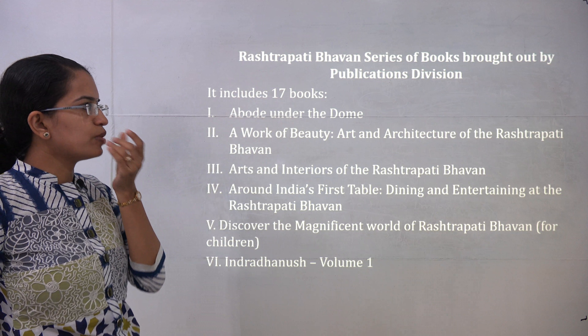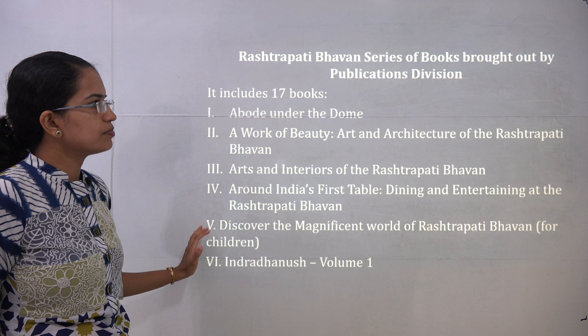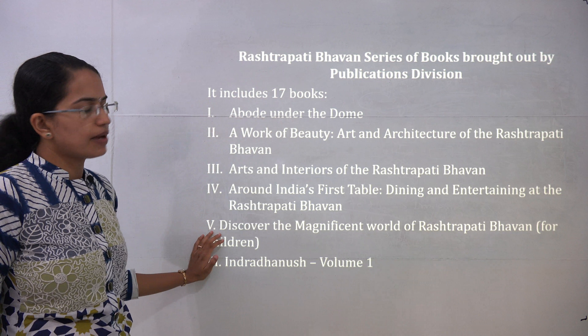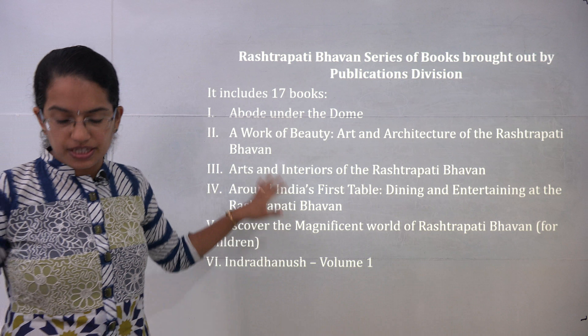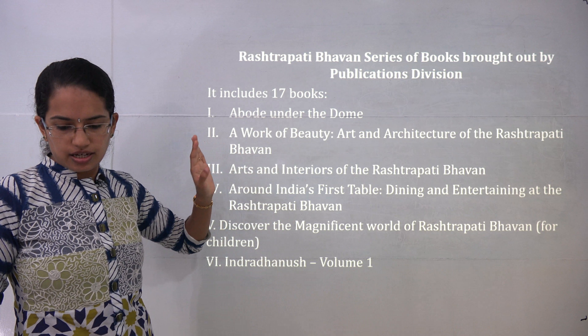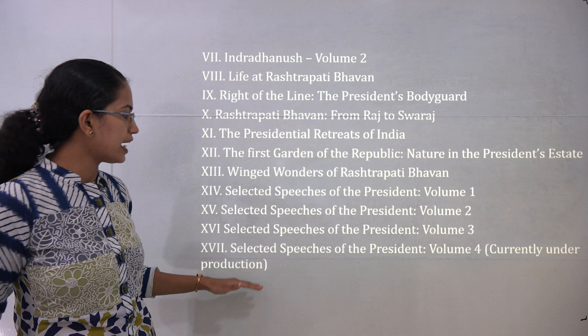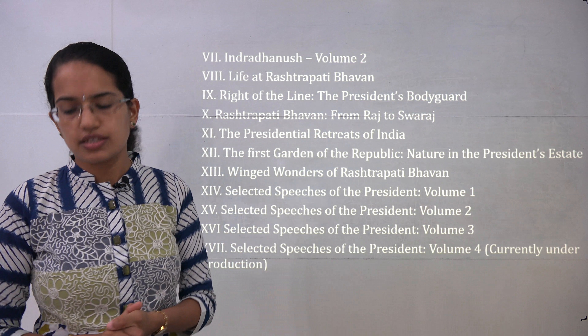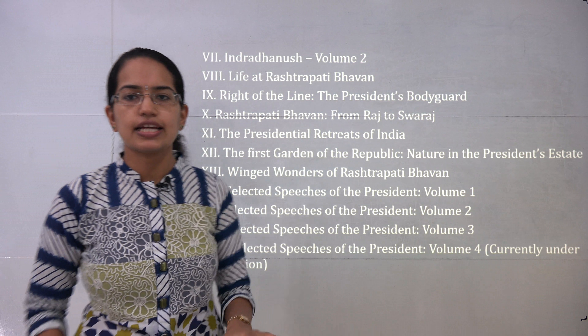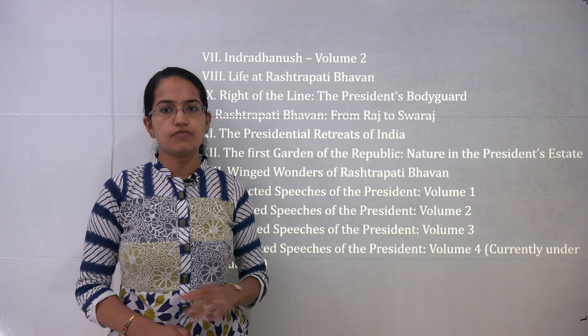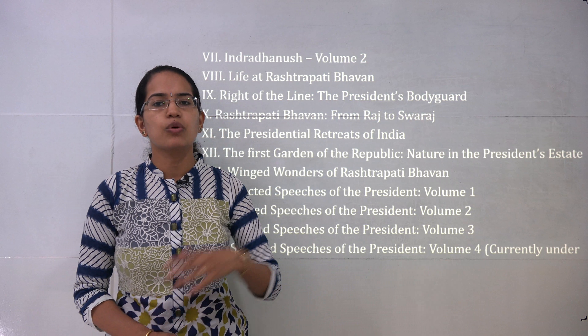The Rashtrapati Bhavan series of books has been brought out by the Publication Division of India, with art designed by Sahapedia, an agency of Indra Gandhi Centre for National Arts. This is a list of 17 books available in the handouts. With this, we covered the highlights of the Yojna June 2017 edition. We will be covering more issues on Yojna and Kurukshetra in the upcoming lectures.